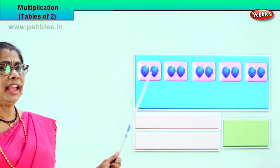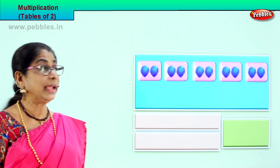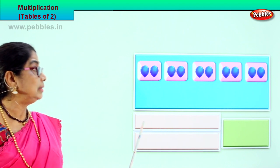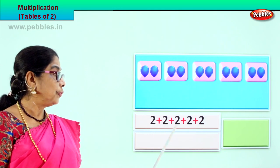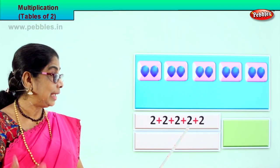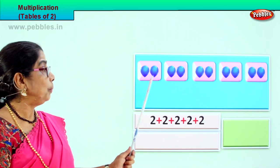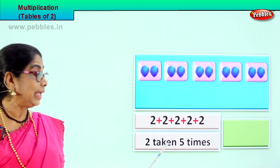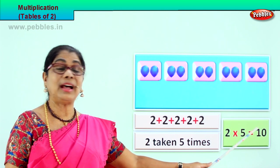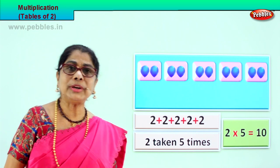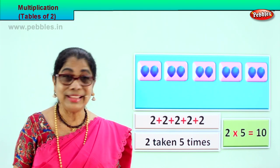Let's look at another grouping of two. There are five groups of two. Two taken five times: one, two, three, four, five times. Two plus two plus two plus two plus two. Two plus two, four; four plus two, six — wait, eight; eight plus two, ten. Two taken five times. That is two into five equals ten. Two fives are ten. You can see and read it yourself.